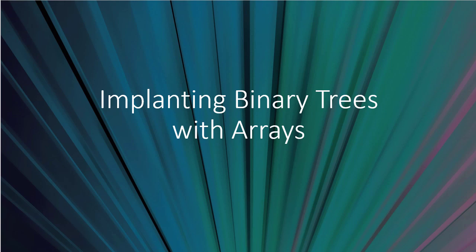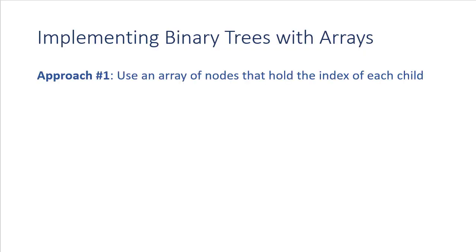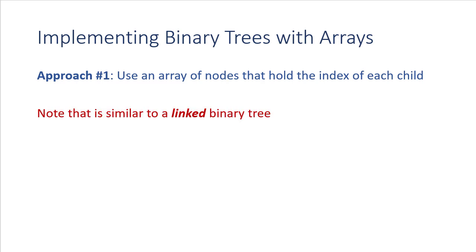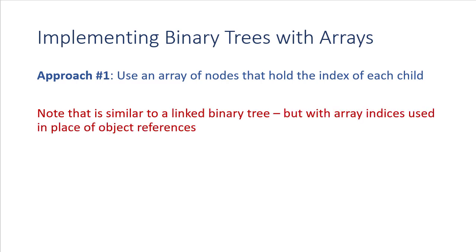In this video we're going to see how we can use arrays to implement binary trees. The first approach is to use an array of node objects where each node holds the index of each child. This is very similar to a linked binary tree where a node object has references to the children, but here we use array indices instead of object references.